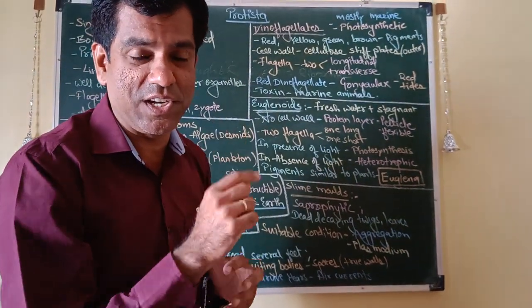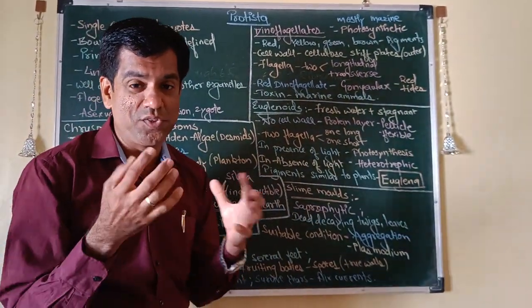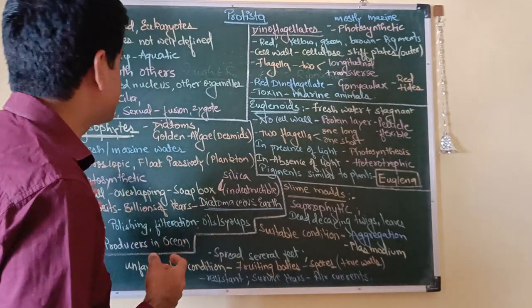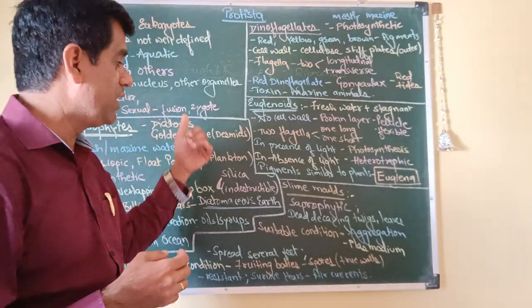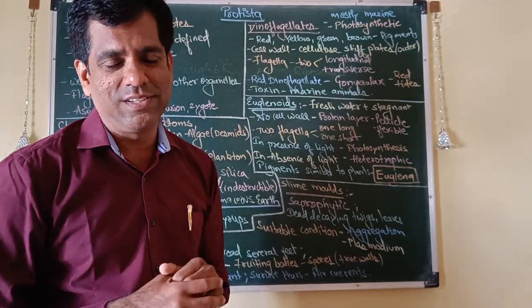This is the diverse kingdom of Protista. Stay tuned for one Protista still remains, that is your protozoa, which is more animal-like. You have chrysophytes, dinoflagellates, euglenoids, and slime molds. Thank you so much.